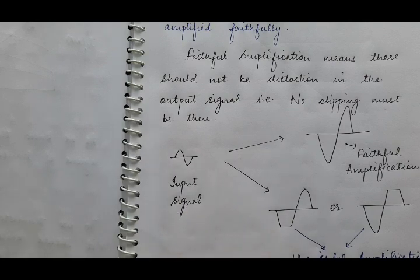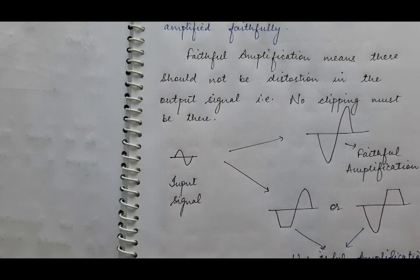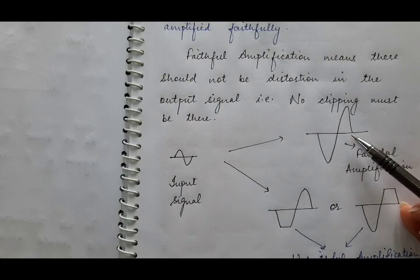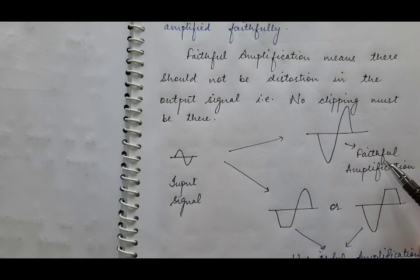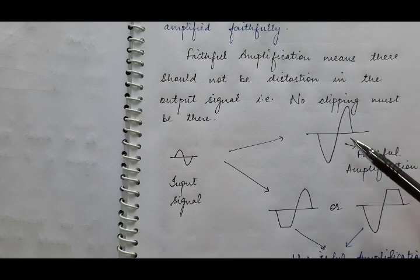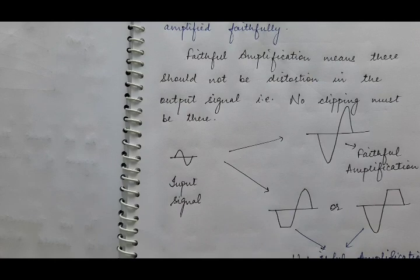This is known as faithful amplification — when our output signal is an amplified signal and there is no distortion. The output signal comes without distortion and with amplification. That is known as faithful amplification.